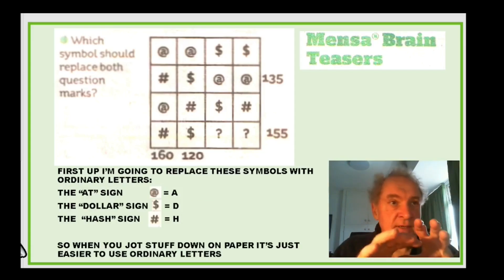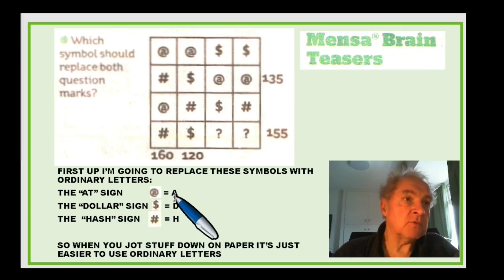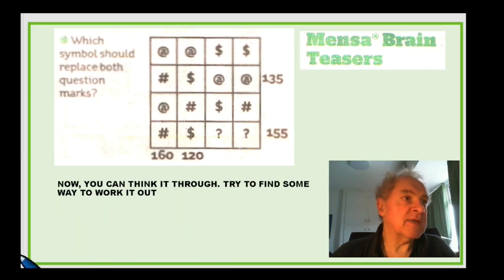To make life easier, I'm actually going to replace it. I'm going to replace the at symbol with an A, the dollar symbol with a D and the hash symbol with an H. So I was actually going to do this just for the sake of doing this puzzle. That's the way I would do it. I would jot it all down on paper and I really have the greatest difficulty in writing down these symbols. I would just use A, D and H. You know as long as I know what they represent it's good enough. Now how do we work this out? What are we going to do?